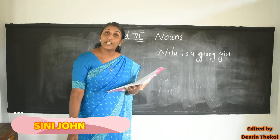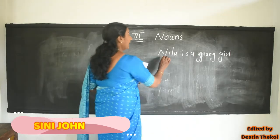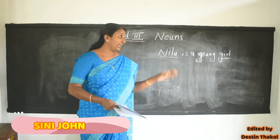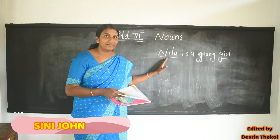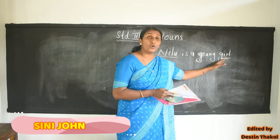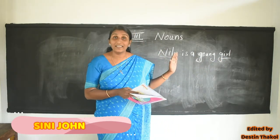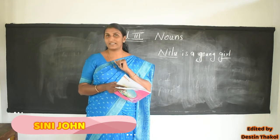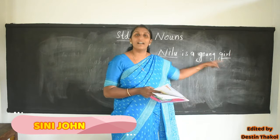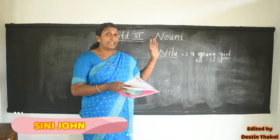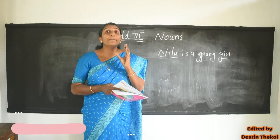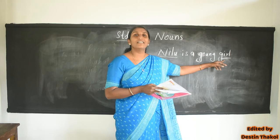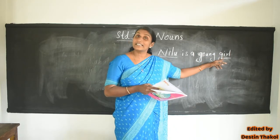What is your name? Nilu is the name of a person. See, Nilu is the name of a person. Then, a small kid we can call girl. So in this sentence we can see two nouns: Nilu and girl. Nilu is a name of a person, and girl is another noun.